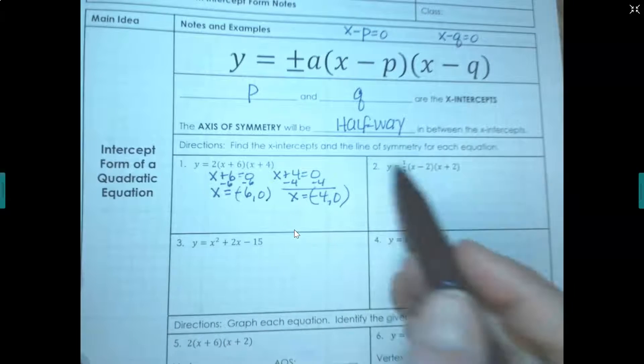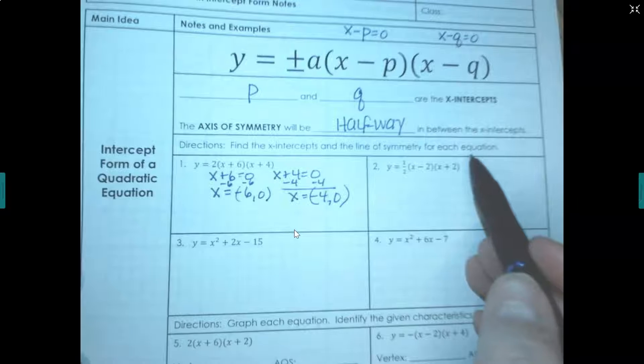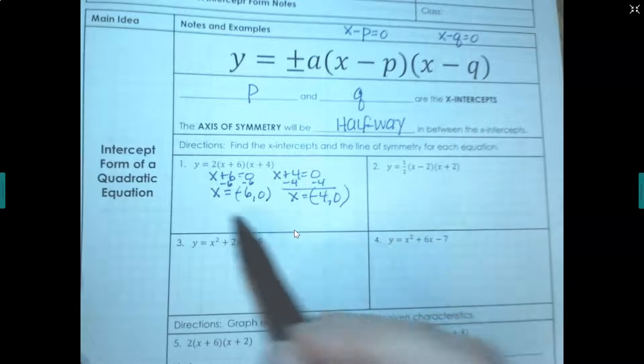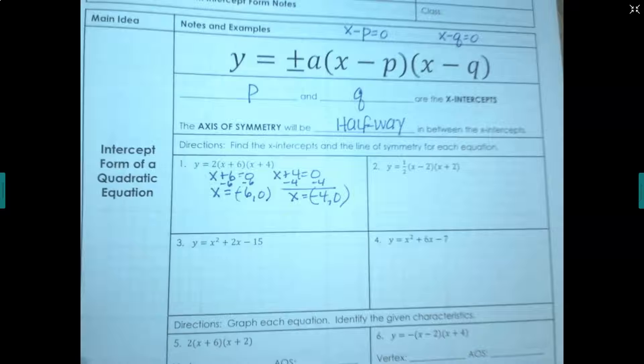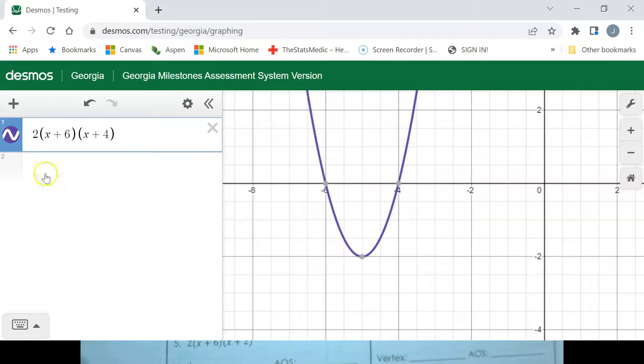There's my two x-intercepts and then the line of symmetry or the axis of symmetry falls halfway between them because the vertex will fall halfway between them. So let's take a look at our graph so we can kind of visualize this.